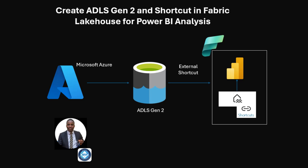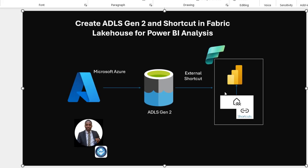So let's go into this project and we're going to go through this flow. We're going to start off in Microsoft Azure, then create ADLS Gen 2, then create external shortcuts in Fabric, and then move on to creating our Power BI report.